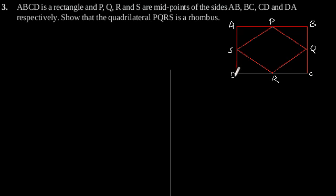CD and DA. Now to prove that PQRS is a rhombus, let's join AC and BD like this, and join BD like this.